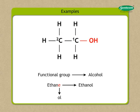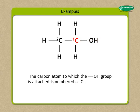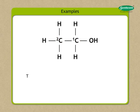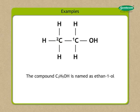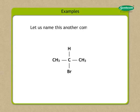Since the functional group is alcohol, remove the 'e' from the word ethane and substitute it with 'ol' — 'ol' stands for alcohol. The carbon atom to which the -OH group is attached is numbered as C1, and the other carbon atoms are numbered accordingly. The compound C₂H₅OH is named ethane-1-ol, or ethanol, indicating that the functional group -OH is attached to the carbon atom at the end of the chain.